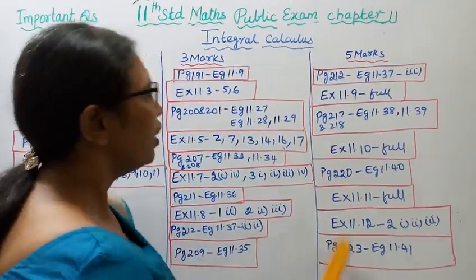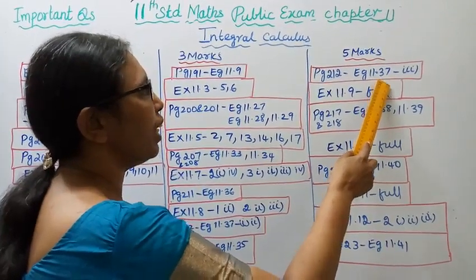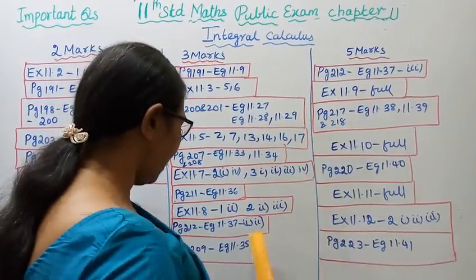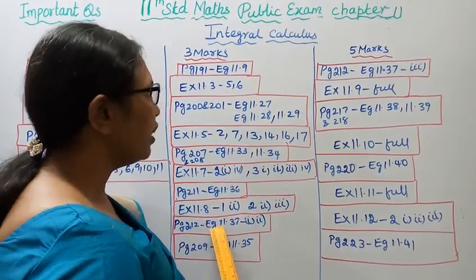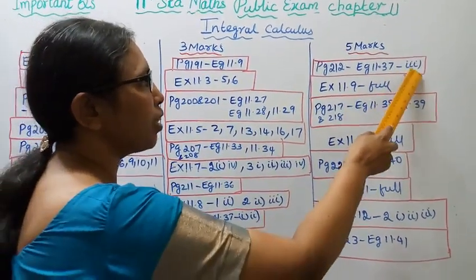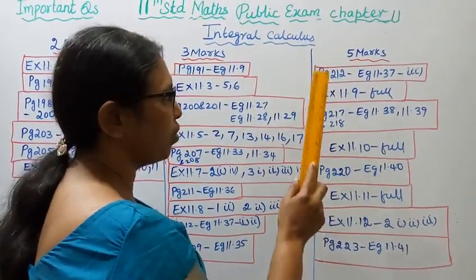Five marks: Page 212 Example 11.37, third subdivision. Example 11.37 first and second is three marks, third subdivision is five marks. Exercise 11.9 full you have to practice.